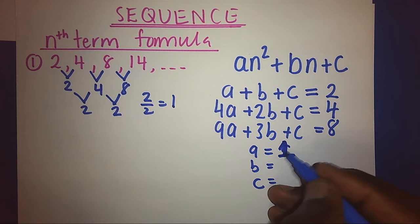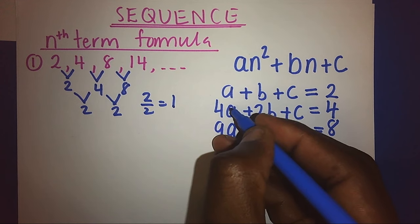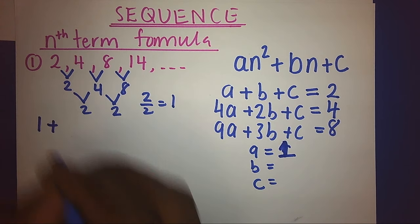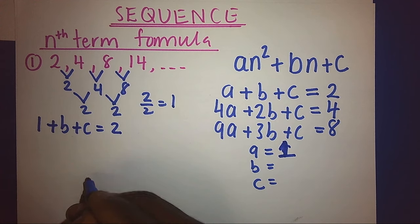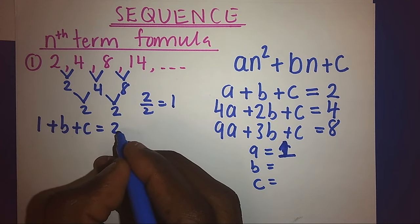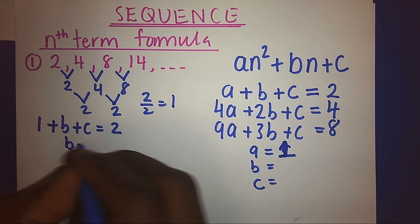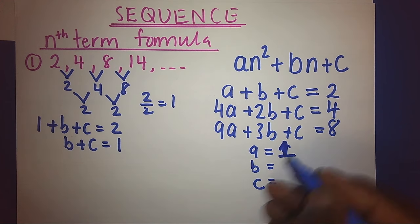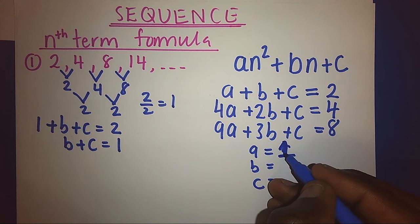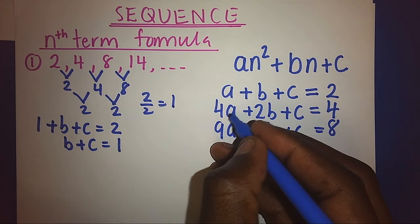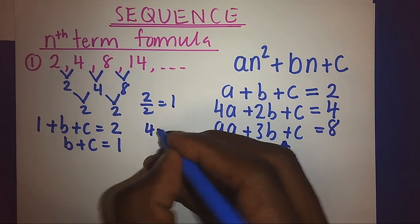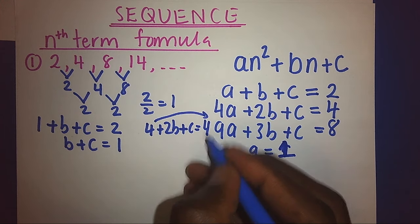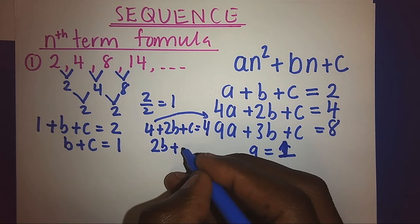After getting my value of a, I can substitute into the first two equations. If I substitute a=1 into the first equation, I get 1 + b + c = 2, so b + c = 1 as my first equation. Then I substitute a=1 into the second equation: 4 + 2b + c = 4, which gives me 2b + c = 0 as my second equation.